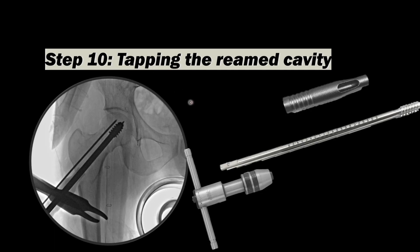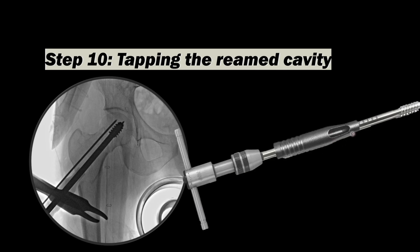The next step is tapping. For tapping, we have three attachments: the tap sleeve, the tap, and the T-handle provided by the manufacturer. The sleeve has to be inserted in the area meant for the barrel. First, insert this sleeve over the tap, then attach the T-handle — this is the assembly to make before starting tapping. With gentle rotatory turns, insert the tap till the required area.